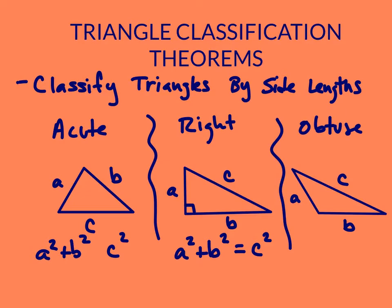For an acute triangle, I have a similar relationship: A squared plus B squared and C squared, where the sum of the squares of my two smaller sides is larger than the square of my longest side. For an obtuse triangle, A squared plus B squared is less than C squared. These are the formulas we use to classify our triangles.